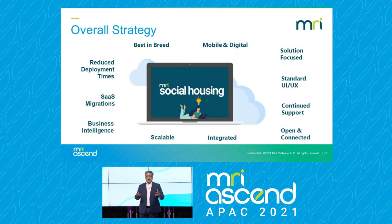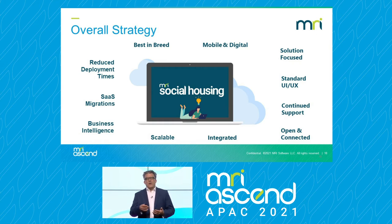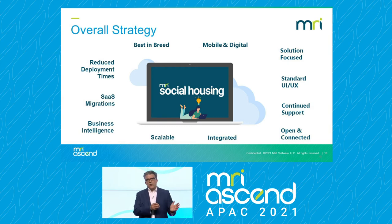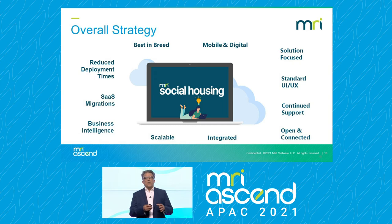From a strategic perspective, where are we going with these software solutions? Our overarching philosophy is to deliver scalable, integrated, open and connected products — to focus on solutions rather than individual products, to address challenges and problems faced within the sector. We aim to migrate products that aren't already cloud-based into the cloud, to focus on SaaS migrations and business intelligence. Data is often called the new oil or the new gold — a lot of organisations have the data but don't have the capabilities to analyse it. So business intelligence integration within our software suite is absolutely key. We're also looking to standardise user interface and user experience, and importantly — given what the sector has gone through over the last 12 months — to mobilise and digitise our solutions.